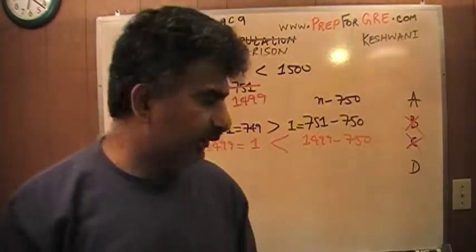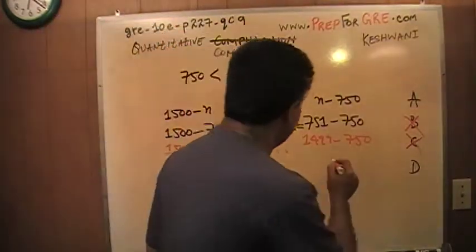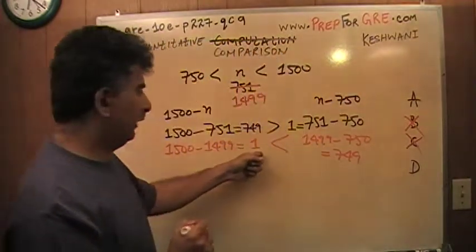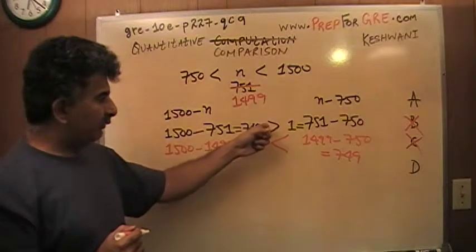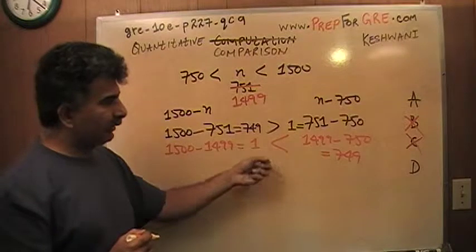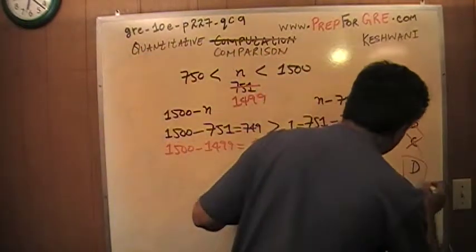And now this is the case. Now the quantity in column B is bigger because this equals 749 and 749 of course is more than one. So before this quantity was bigger, column A was bigger, now column B is bigger, we are getting a conflicting answer. Therefore the answer is D.